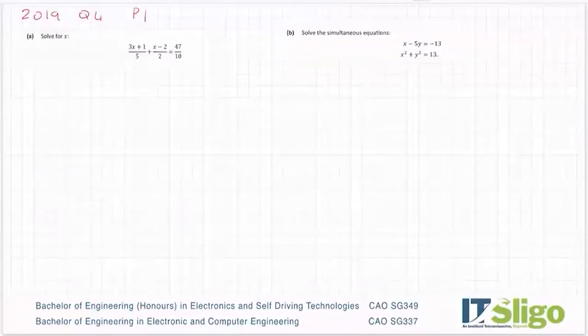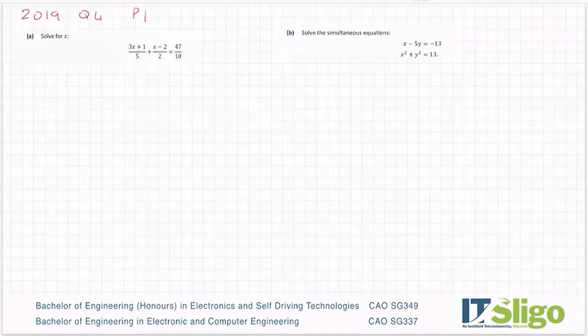Right, the 2019 question on algebra on the Leaving Cert course, again an algebraic fraction and a set of simultaneous equations.